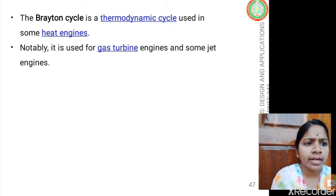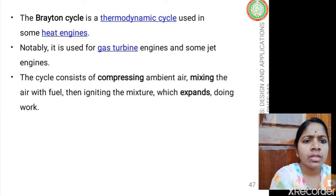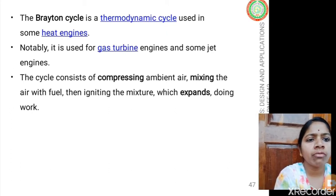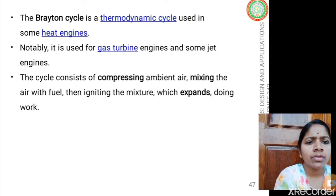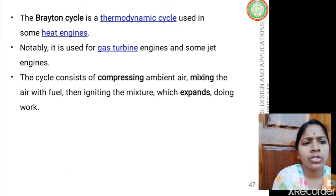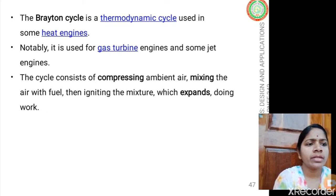The Brayton cycle is notably used in gas turbines and even some jet engines. This cycle consists of four processes: the compressing of air, mixing of air with fuel, combustion and ignition of the mixture, expansion in the turbine, and then exhaust.